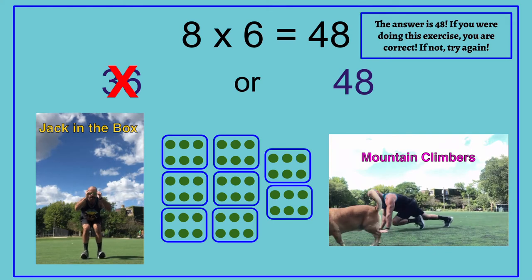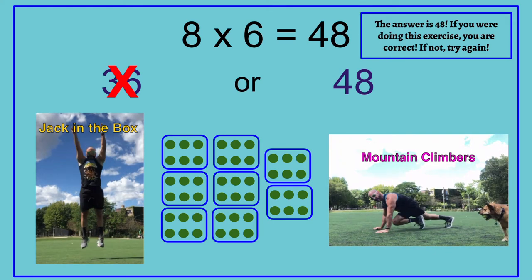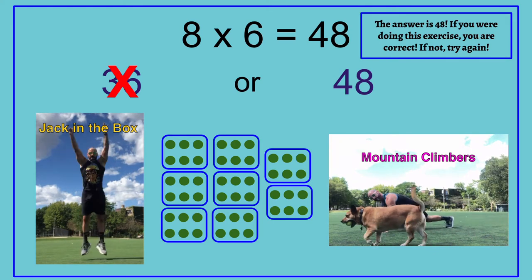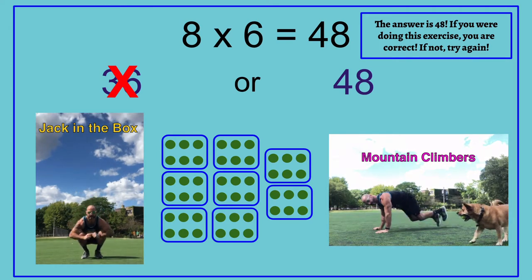8 times 6 — the answer is 48. If you are doing this exercise, you are correct. If not, try again. 8 times 6 equals 48.